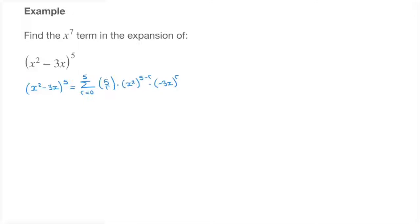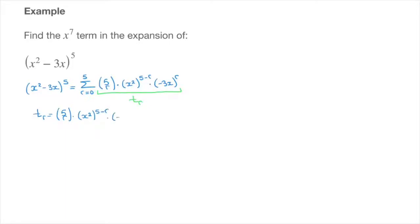To find the x to the power of 7 term, we're going to find the value of r at which the general term is an x to the power of 7 term. I usually call the general term tr, t as in term. So tr equals the binomial coefficient 5r, times x to the power of 2 raised to the power of 5 minus r, times negative 3x raised to the power of r.